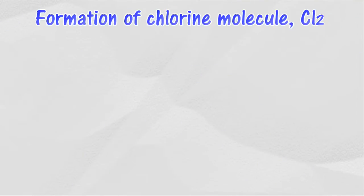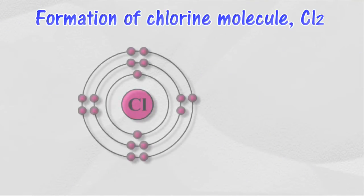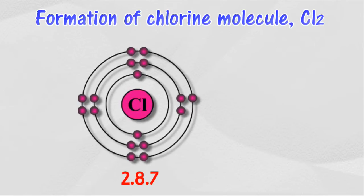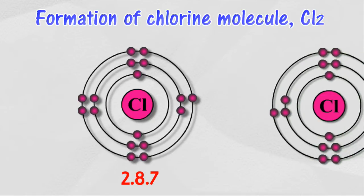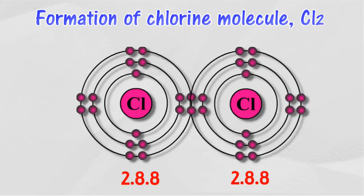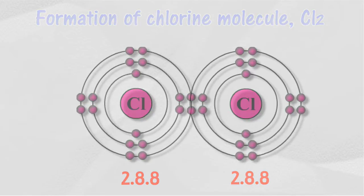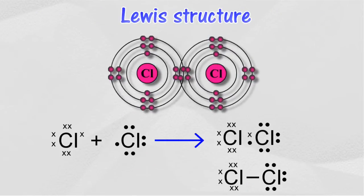For example, the formation of a chlorine molecule. Each chlorine atom has an electron arrangement of 2.8.7. The outermost shell lacks one electron to achieve a stable electron arrangement. One pair of electrons is shared between two chlorine atoms to produce a chlorine molecule. Each chlorine atom achieves the stable electron arrangement of 2.8.8, and a covalent bond is formed. The Lewis structure for the chlorine molecule is shown as follows.